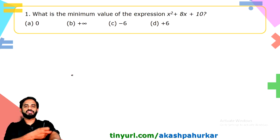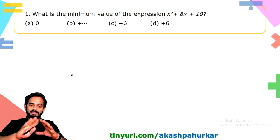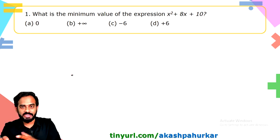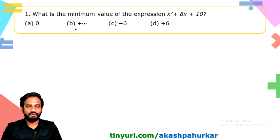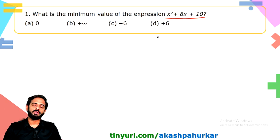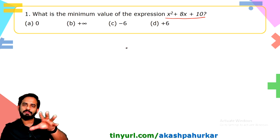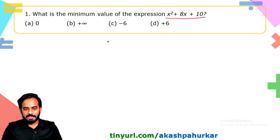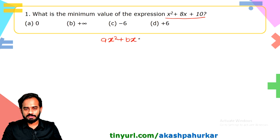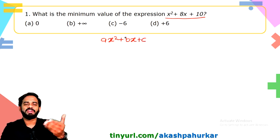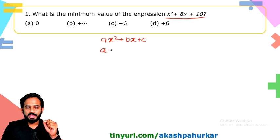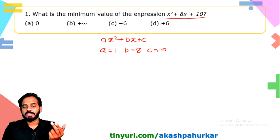Let me know whether you want mixed DPPs or topic-wise DPPs. This is our first question: what is the minimum value of the expression x² + 8x + 10? This is a quadratic expression. The standard format is ax² + bx + c. Here, the value of a is 1, b is 8, and c is 10.